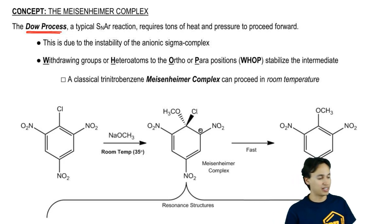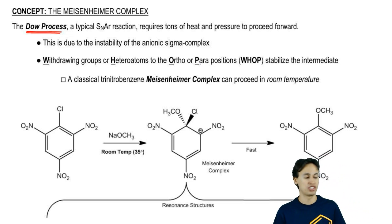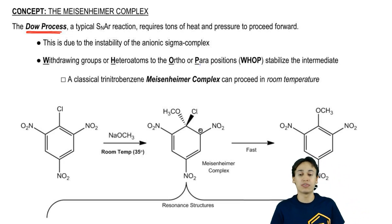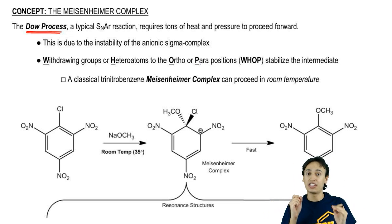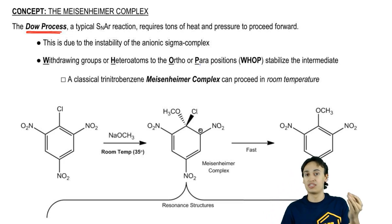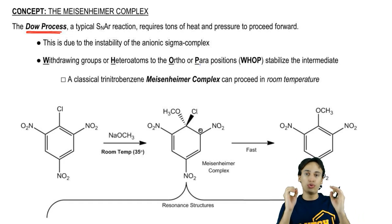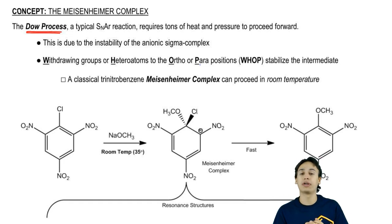The rule that we use for that is WAP — withdrawing groups or heteroatoms in the ortho-para positions will stabilize the intermediate. That anionic intermediate goes through the ortho and para positions relative to the nucleophile. What we're trying to do is use atoms in those ortho and para positions to stabilize that negative charge.